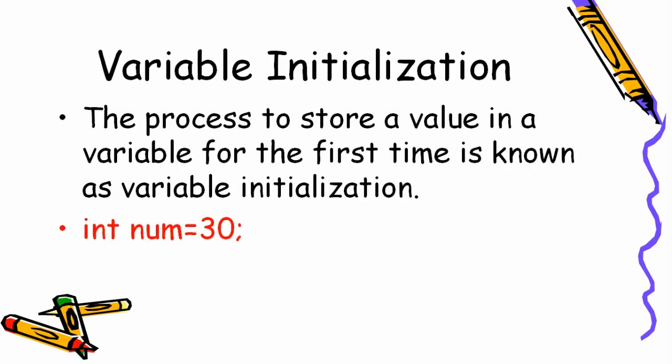So how to initialize a variable — variable का initialization कैसे होता है? The process of storing a value in a variable for the first time is known as variable initialization. जब भी आप कोई variable बनाते हो और उसमें first time कोई value assign करते हो, this is initialization. For example: 'int num = 30' — here declaration and initialization are done together. But if we divide it: 'int num;' on one line and 'num = 30;' on the next, then the first line is declaration and the second line is initialization.